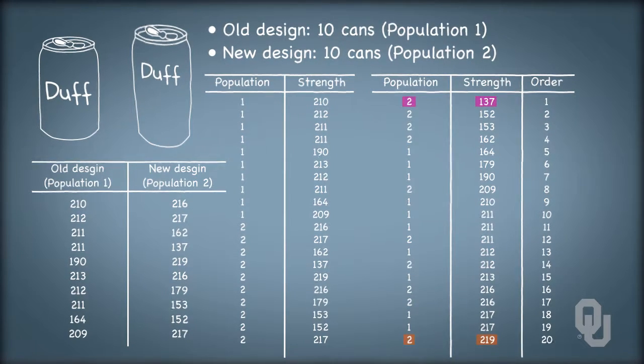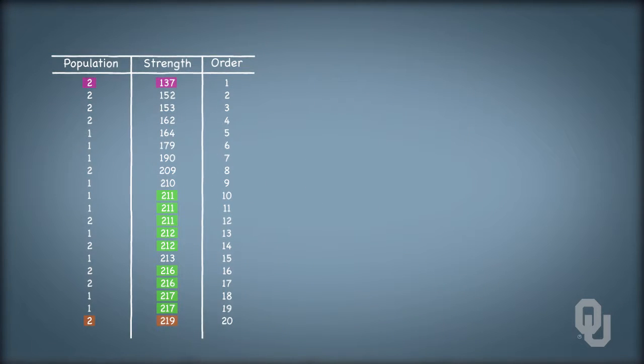But in between, we see a few ties. A few cans that have the exact same bursting strength. When we encounter such a situation, we average their orders together. For example, three cans have bursting strengths of 211 PSI. These cans were originally ordered 10, 11, and 12. Since they're all tied, we average the three original order values together to get an average rank of 11.